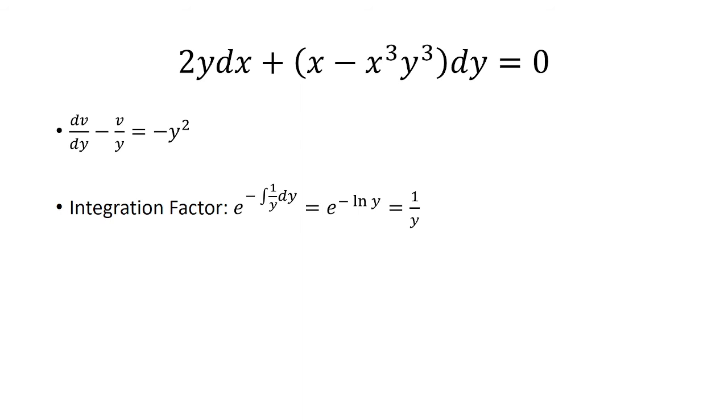At this point, we can find an integration factor, which will be e to the integral of the coefficient of v, which is negative 1 over y. Integrated, we get e to negative ln y, which is 1 over y.